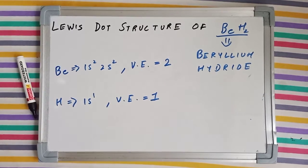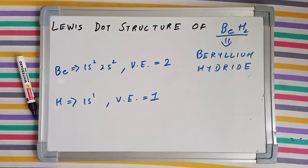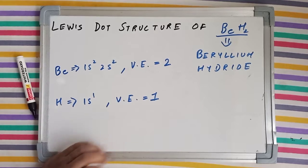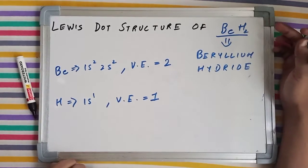We're going to talk about the Lewis dot structure of BeH2, which is known as beryllium hydride. In order to draw the structure, we need to find the valence electrons of the different atoms present in this molecule.